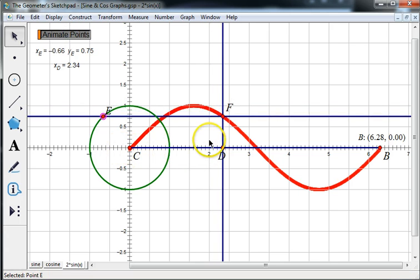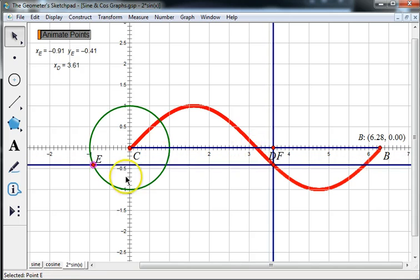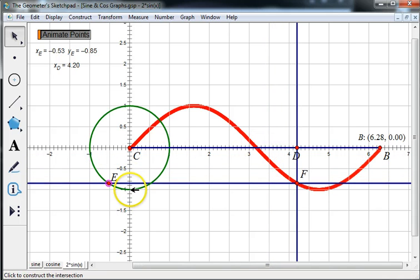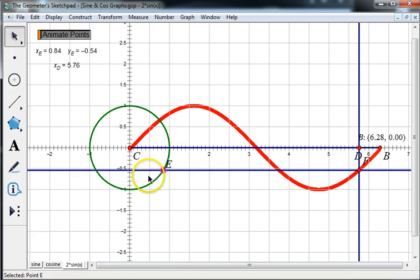At pi over 2, it hits a maximum. At pi, it's 0. At 3 pi over 2, it hits a minimum. And at 2 pi, it's back to 0.